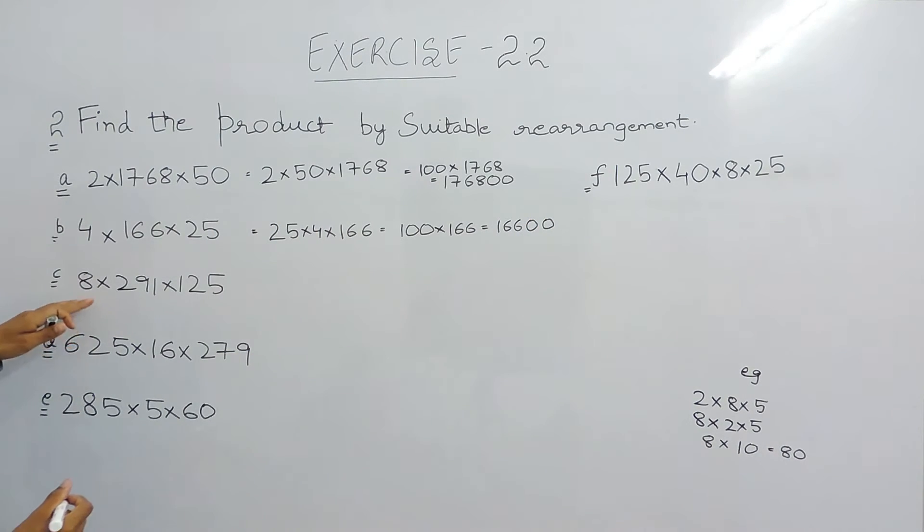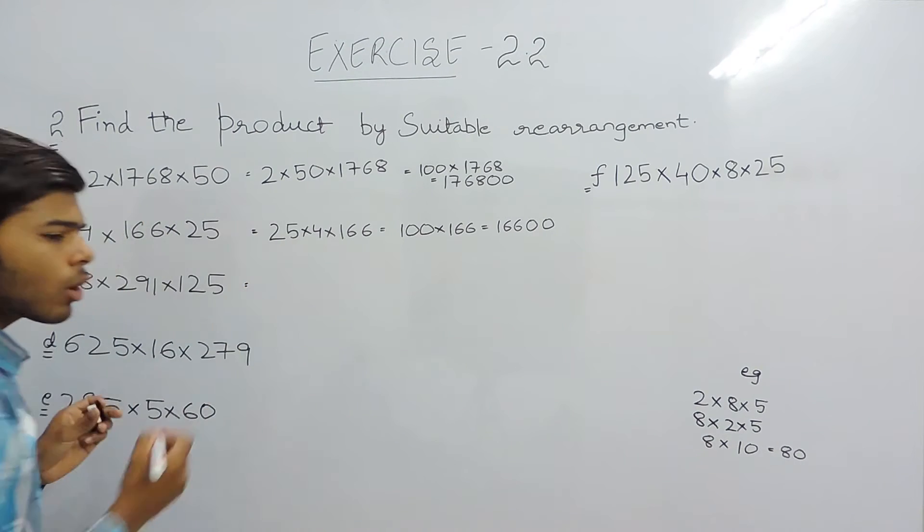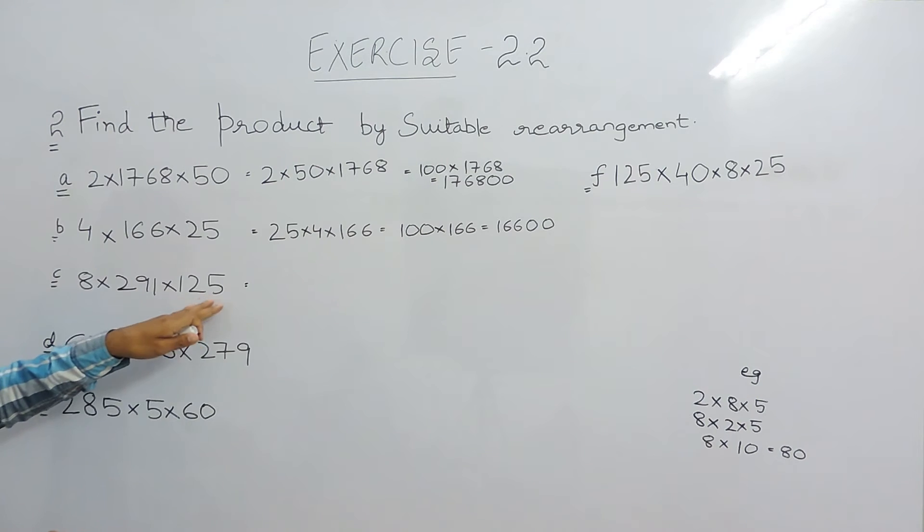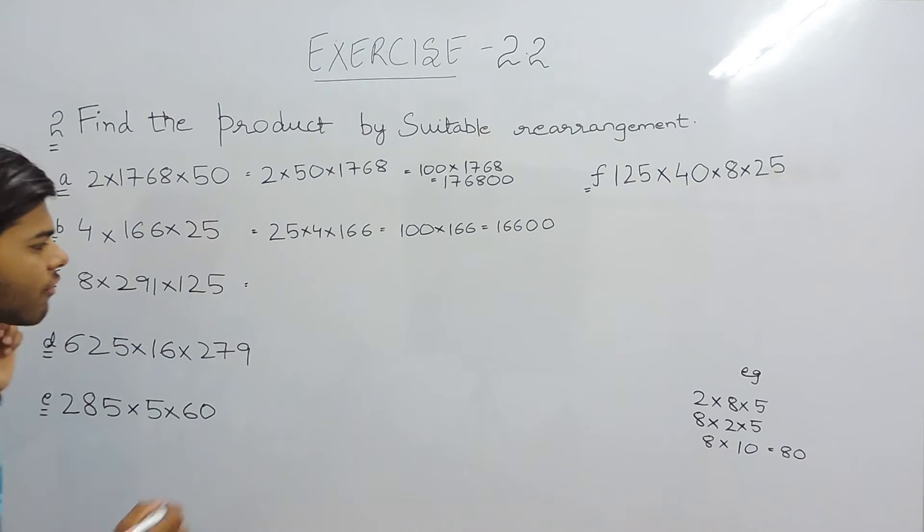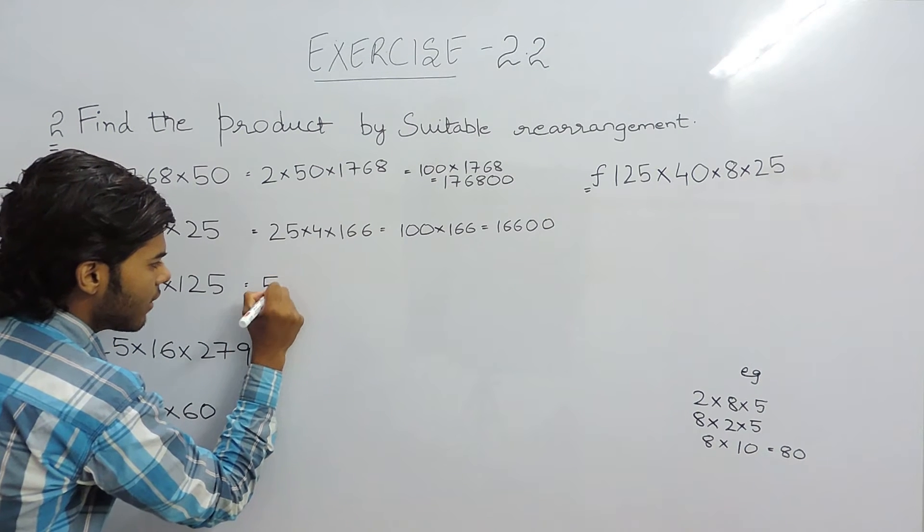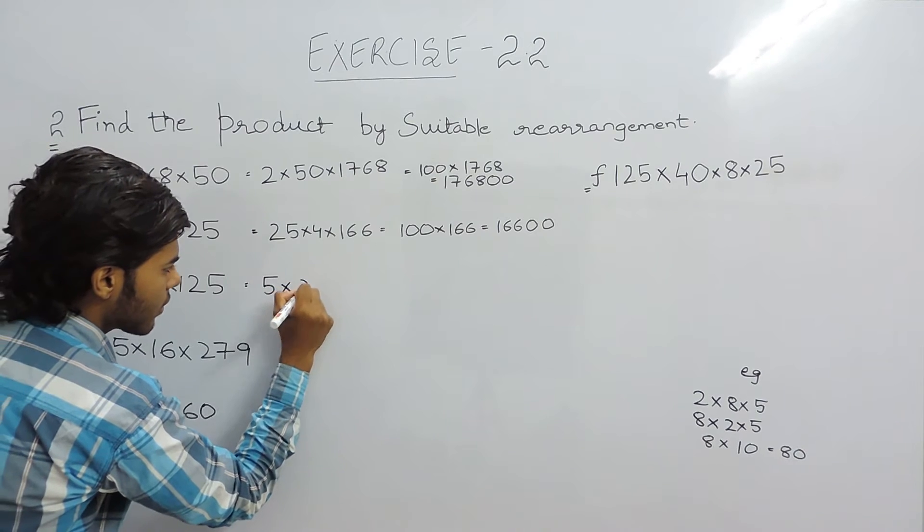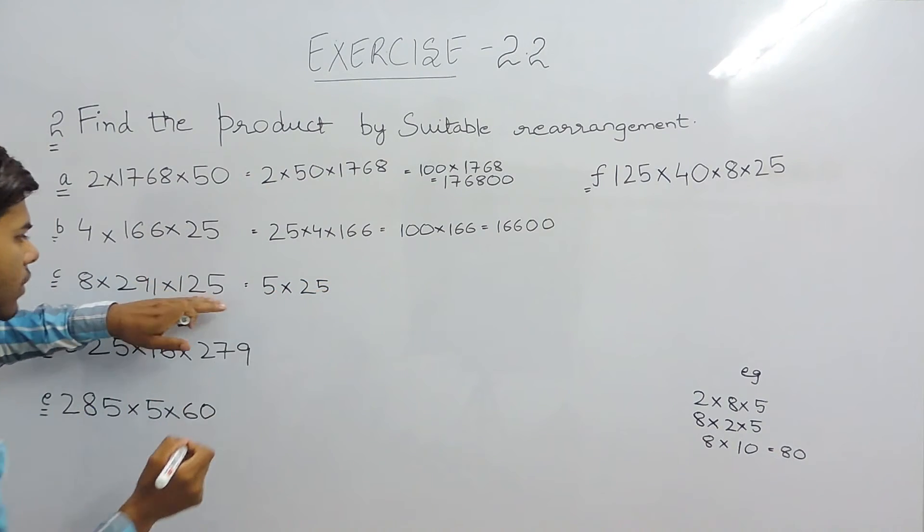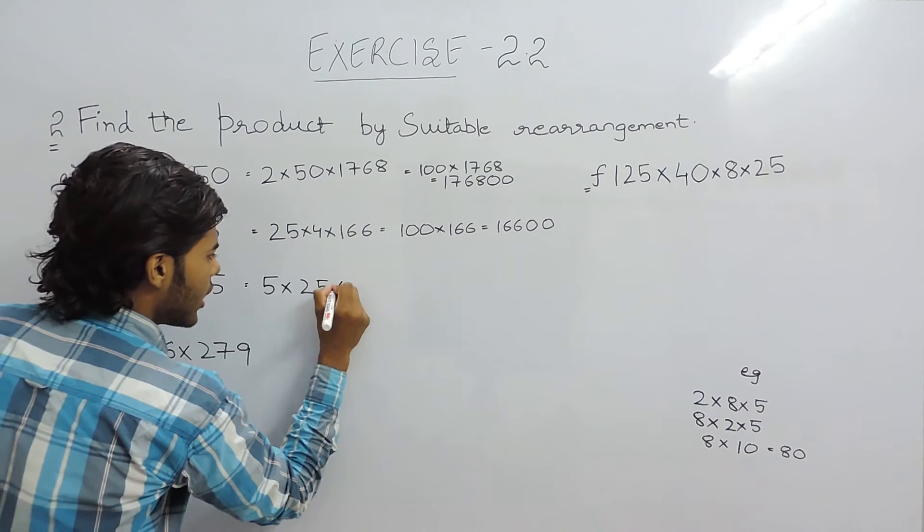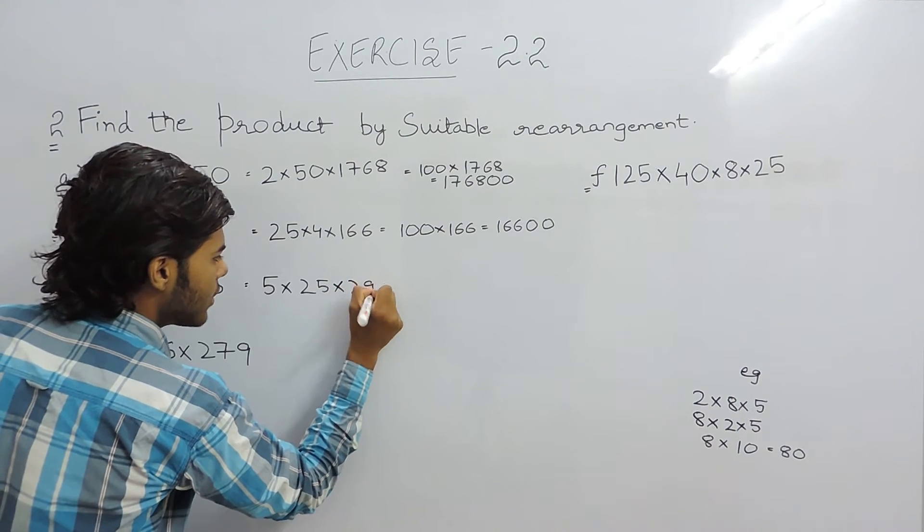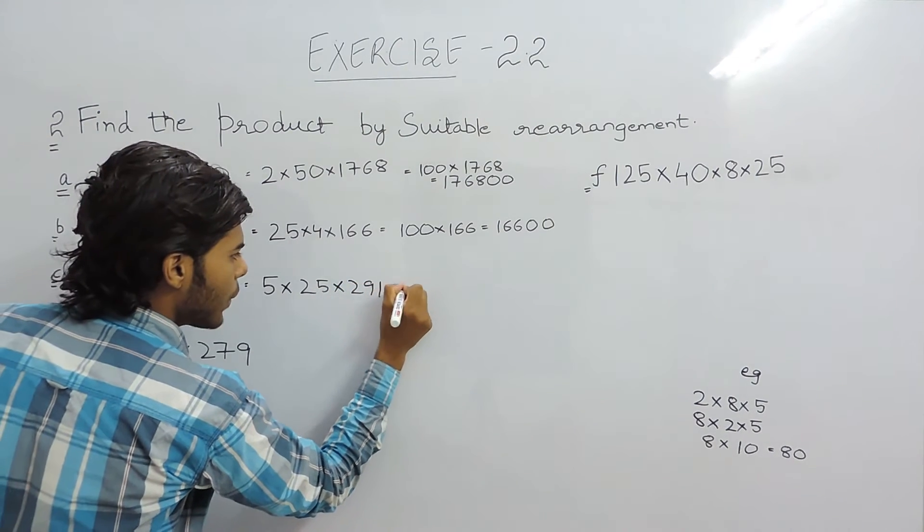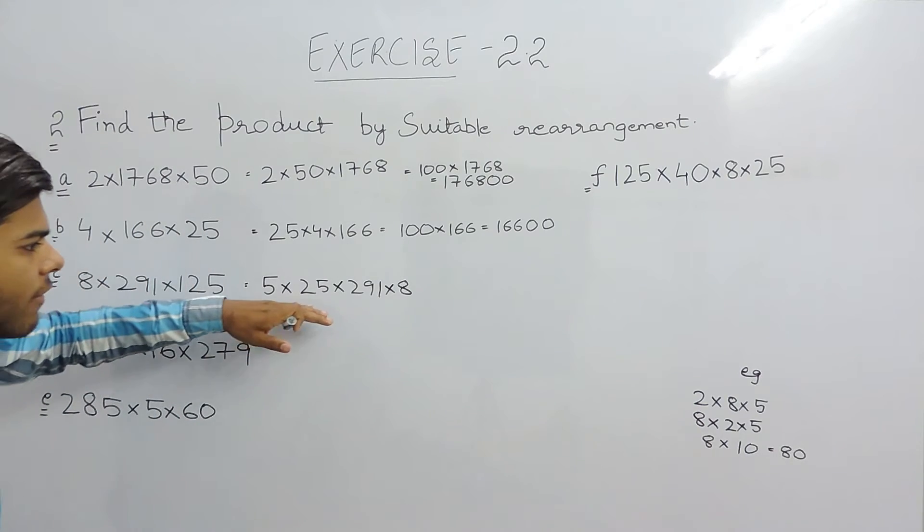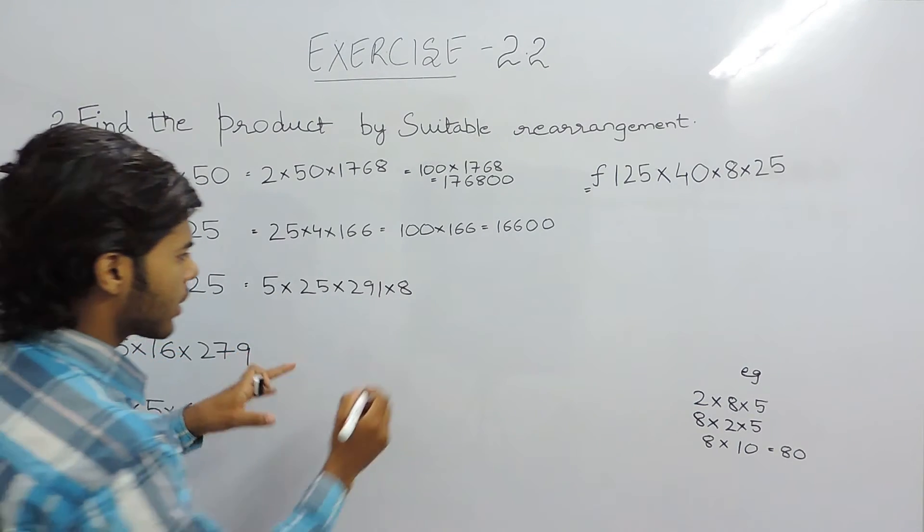In the third part it is 8 into 291 into 125. So you must not be knowing the table of 125 so you can break it in the multiples of 5, which means 5 into 25 in the place of 125 into 291 into 8. So 25 into 8 will give us 200.